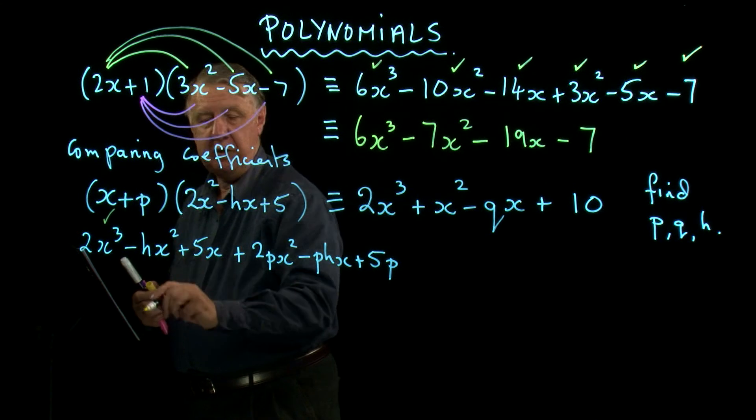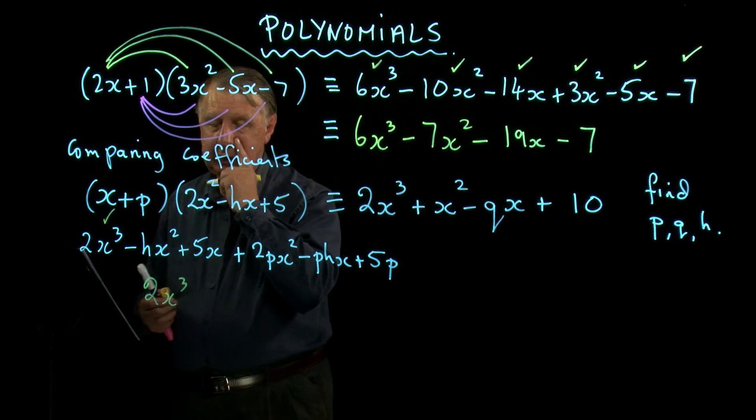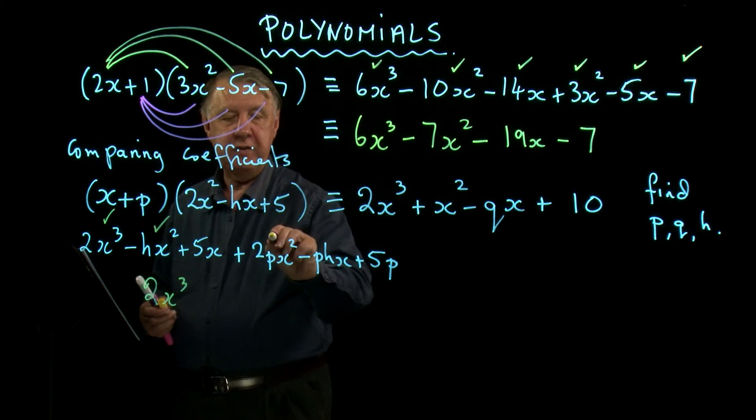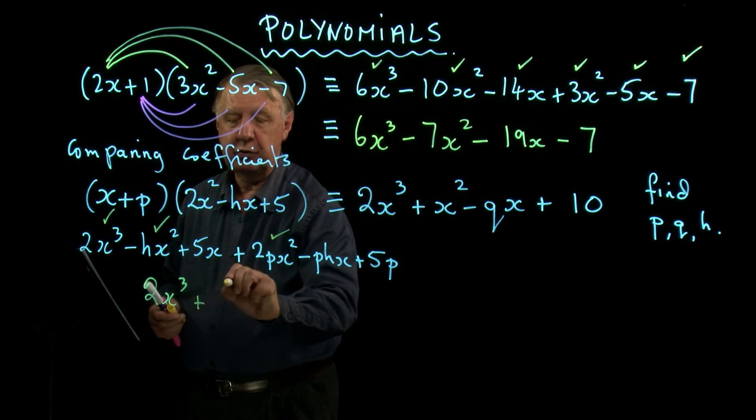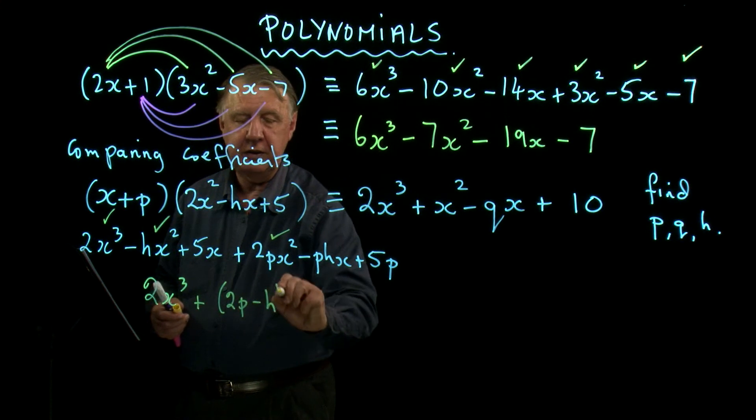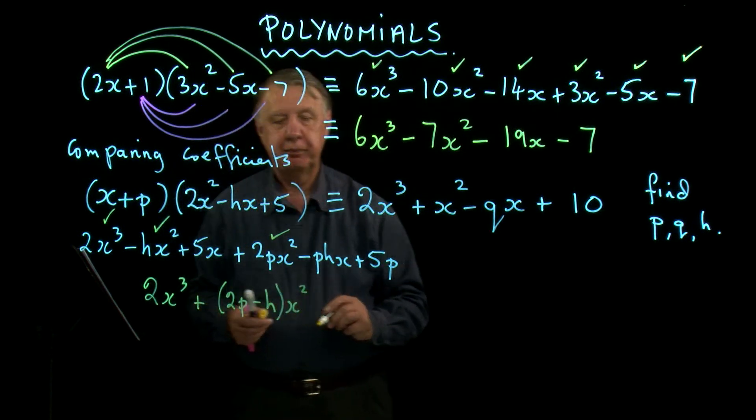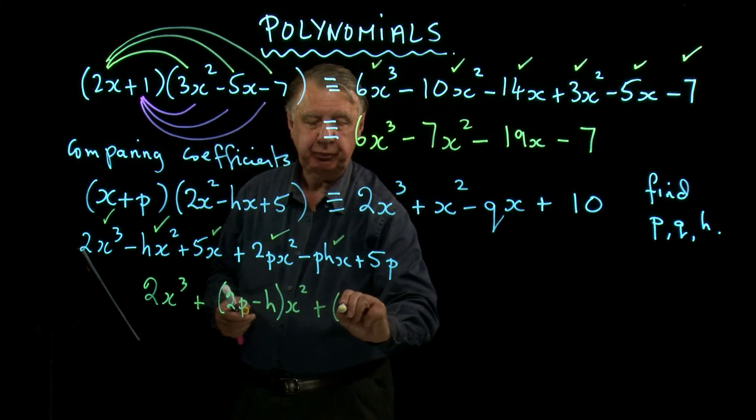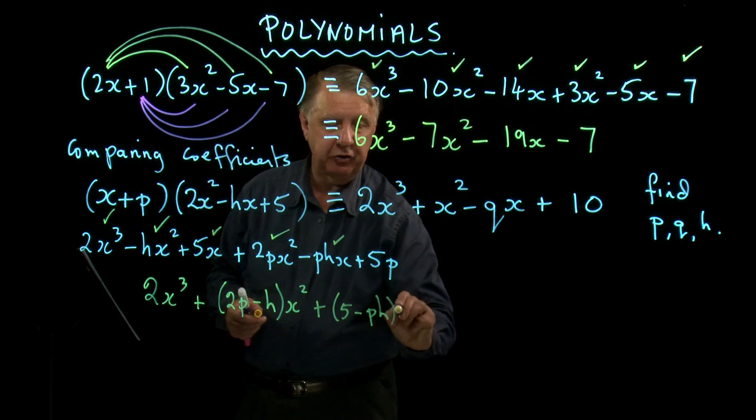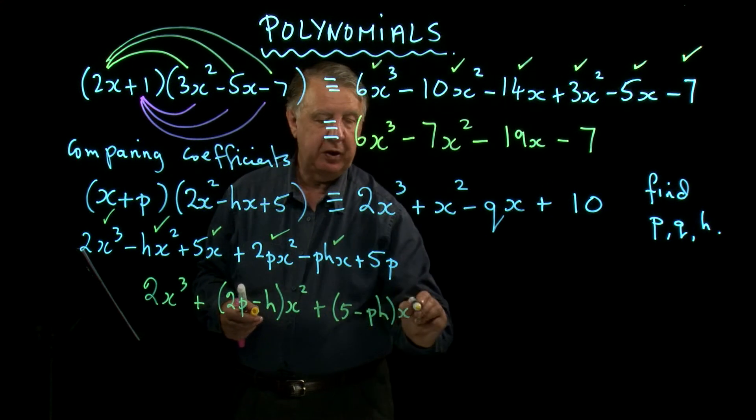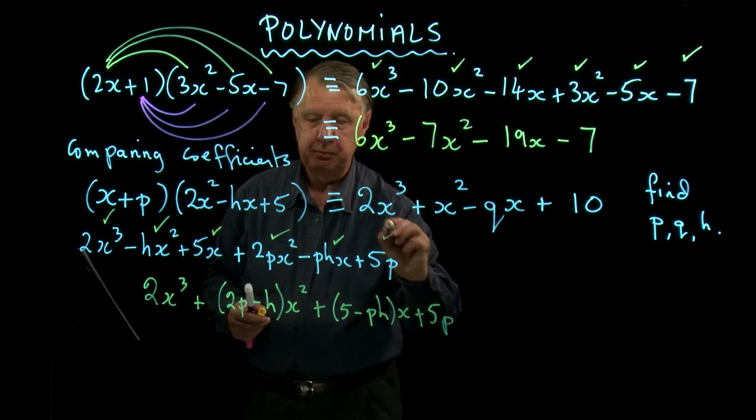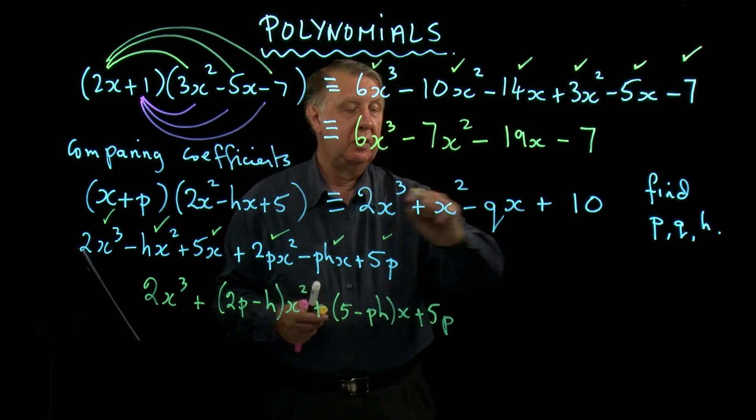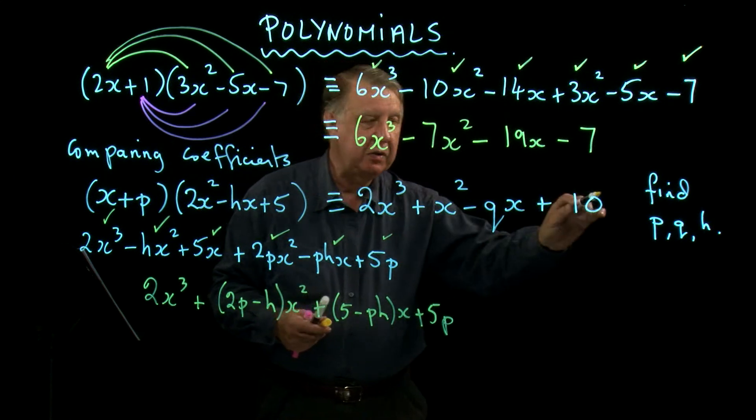So there's only one x³, so it's 2x³. Now be careful with the x² terms. There's a -h and there's a +2p, so I'm going to write that as (2p-h)x². Then there's a 5x and there's a -phx, so there's (5-ph)x. Finally, there's a 5p.